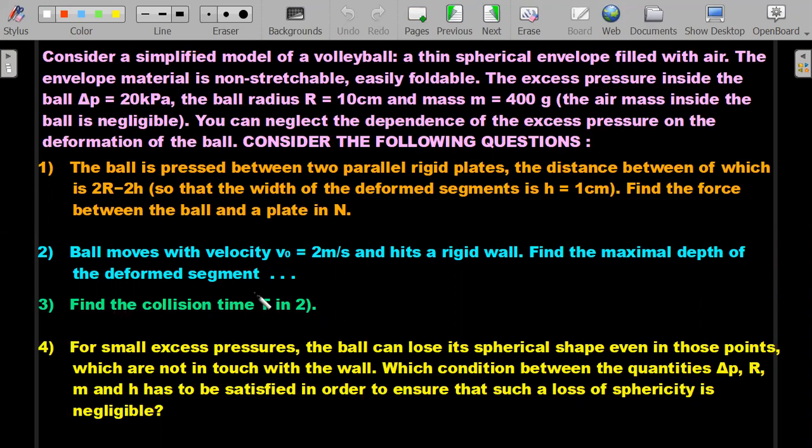(3) Find the collision time T in the second question. (4) For small excess pressures, the ball can lose its spherical shape even in those points which are not in touch with the wall. Which condition between the quantities Δp, R, m, and h has to be satisfied to ensure such a loss of sphericity is negligible? Have a try, then you can go ahead with the solution.